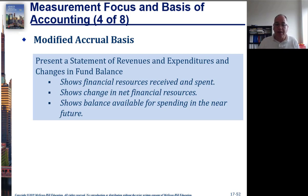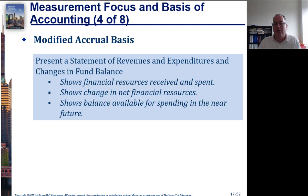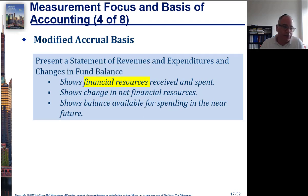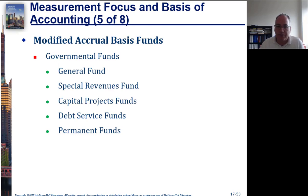The statement of revenues and expenditures and changes in fund balance, under the modified accrual basis, is going to focus on financial resources — think of it like a P&L for governmental funds. It shows the change in net financial resources and the balance available for spending, along with some other information. All five governmental funds are going to be under the modified accrual basis.